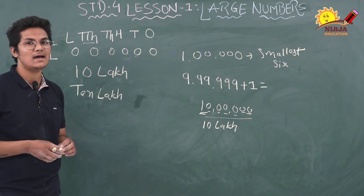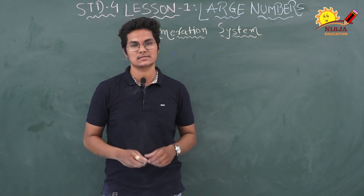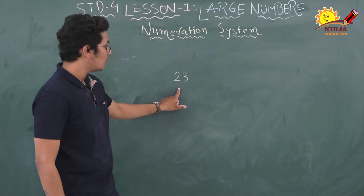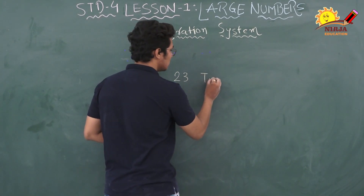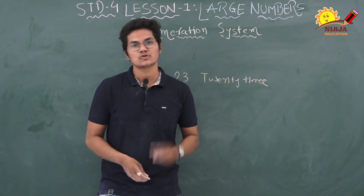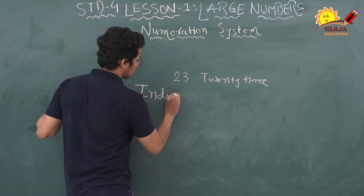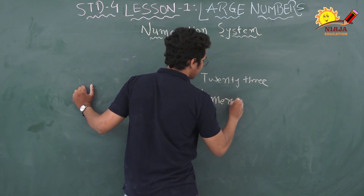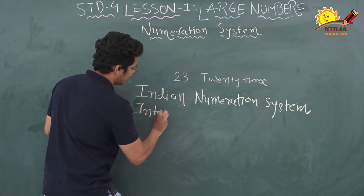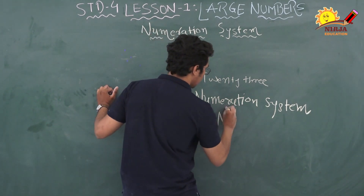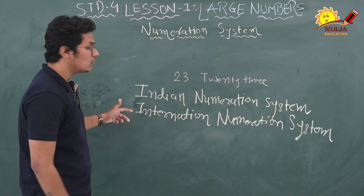Now let's learn about the numeration system. The numeration system is a way of expressing any number in words. For example, the number 23 — we read and write it as twenty-three. There are two numeration systems: the first is the Indian numeration system and the second is the International numeration system.